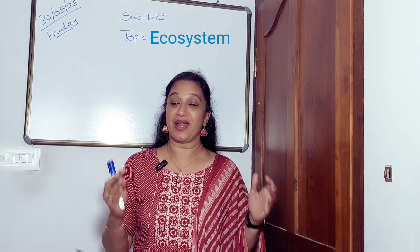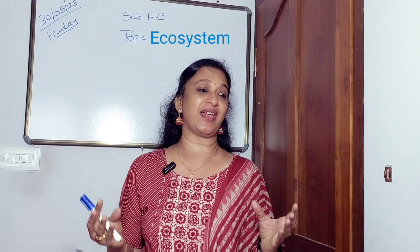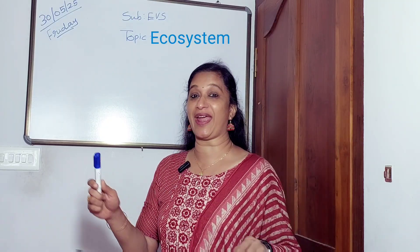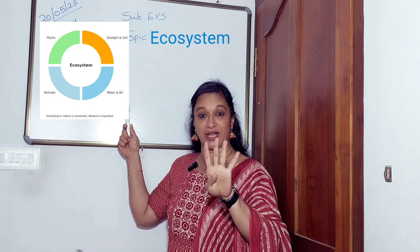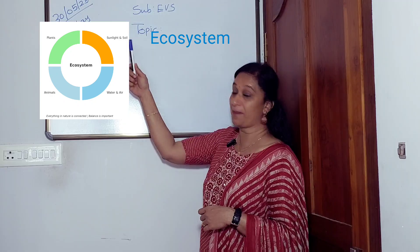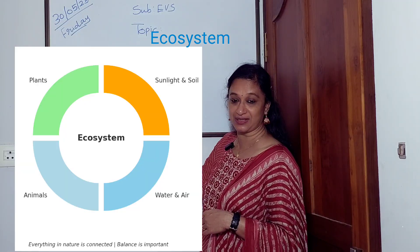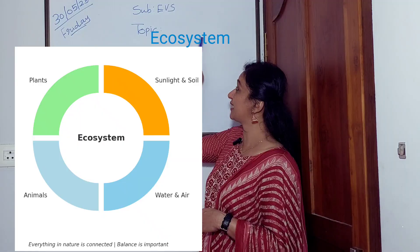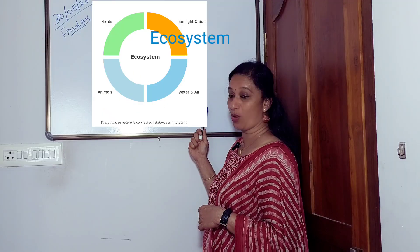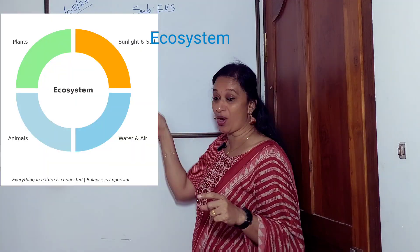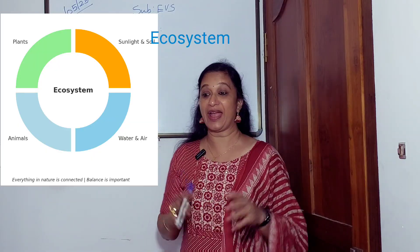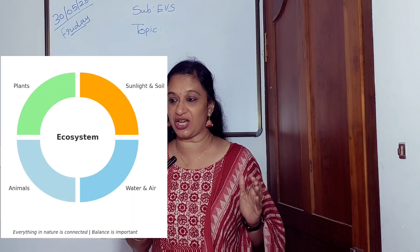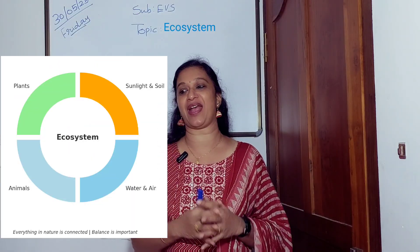Now I have something very interesting to show you. This is our ecosystem. It has four important parts: plants, animals, sunlight and soil, water and air. All these things are connected. They depend on each other to live and grow.